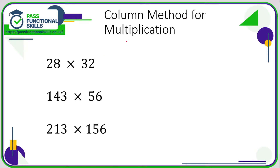Let's look at the first example, which is 28 times 32. When both numbers have the same number of digits, it doesn't matter which number you write on top and which one you write on the bottom. I've seen people do all sorts of things with these questions — some people just do 8 times 2 is 16, 2 times 3 is 6, and think the answer is 616, but that's completely incorrect.